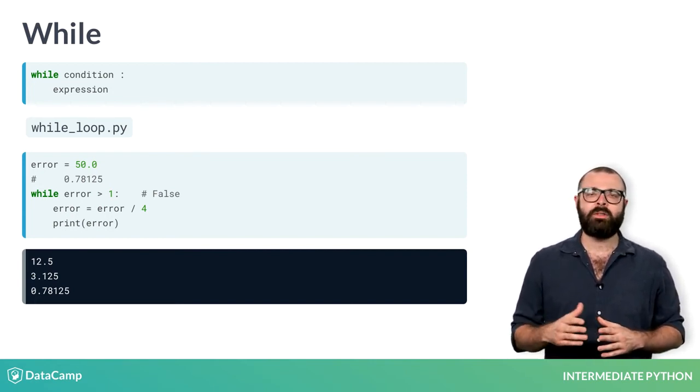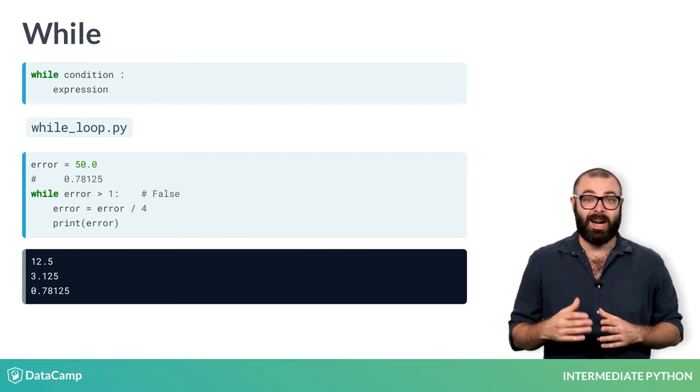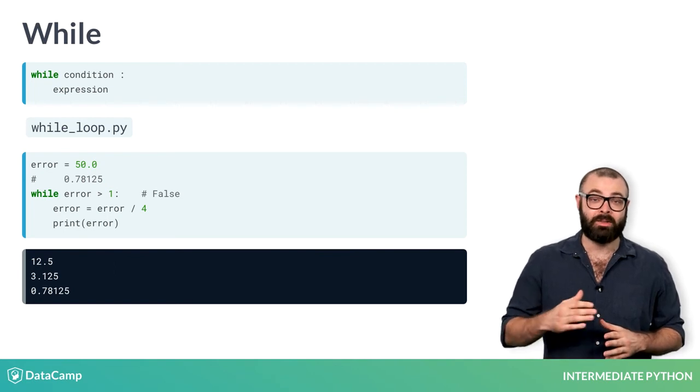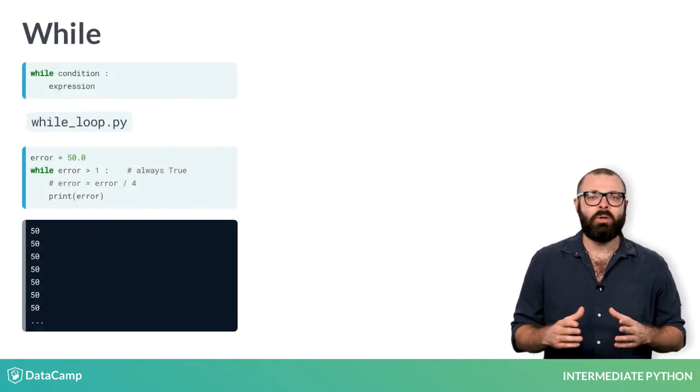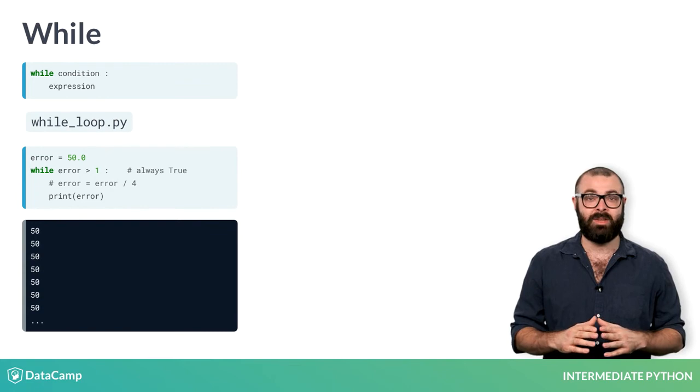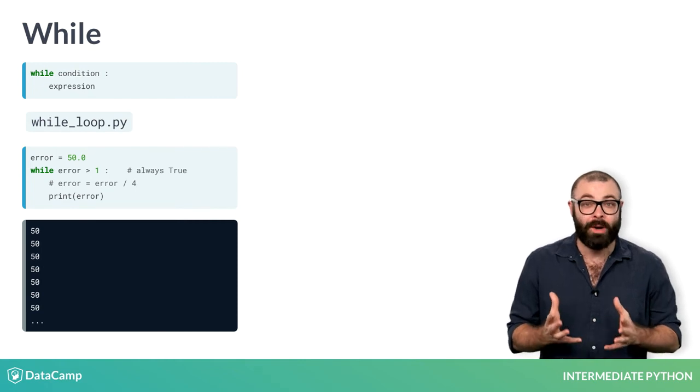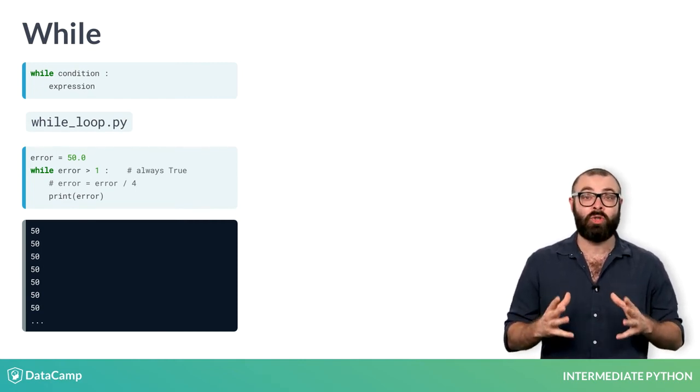Notice that inside this while loop, this update of error is crucial. The error had to go down to become lower than 1 at some point. Suppose that we comment out these updates of the error value and run the script again. The error isn't updated, so the condition is always true and the while loop will go on forever.